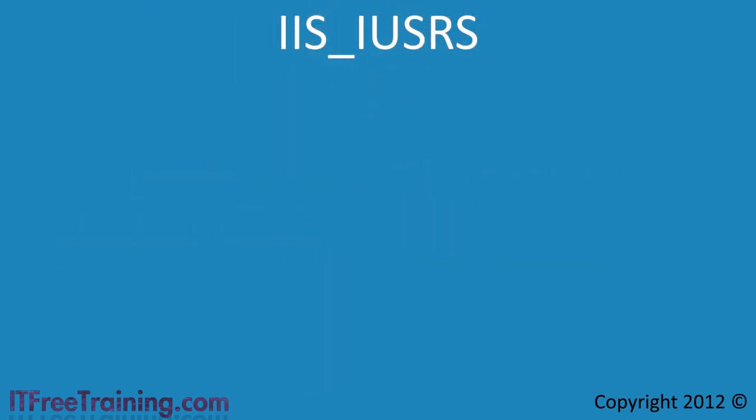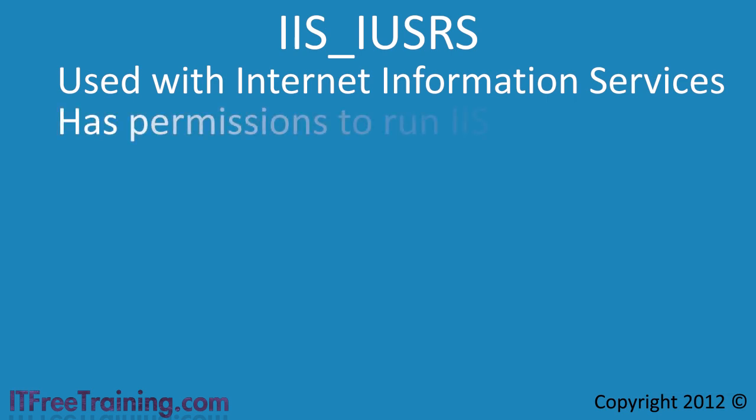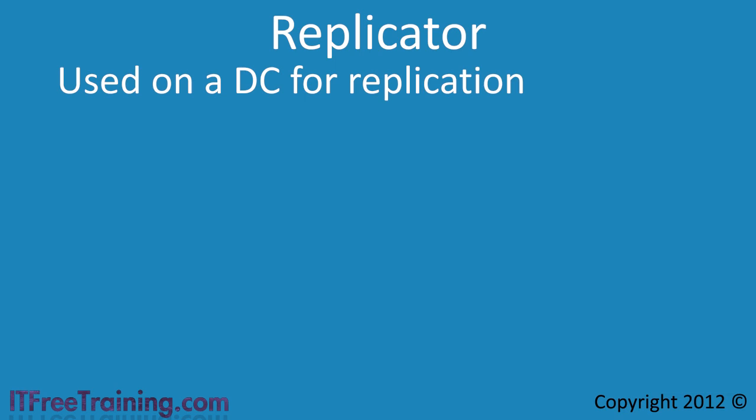The next group is IIS-IUSRS, used by Internet Information Services (IIS). When IIS runs on a system, this group is used to run the software with permissions set to allow it to run without accessing other parts of the system. It also allows IIS data files to be moved between computers without changing permissions. You do not need to add regular users to this group. The next group is Replicator, used by the replicator service on a domain controller — only the replication user should be in this group, so you should never need to add users to it.